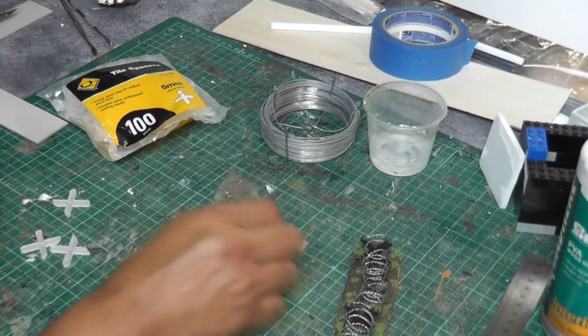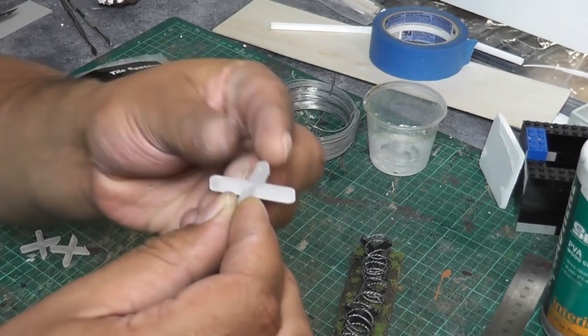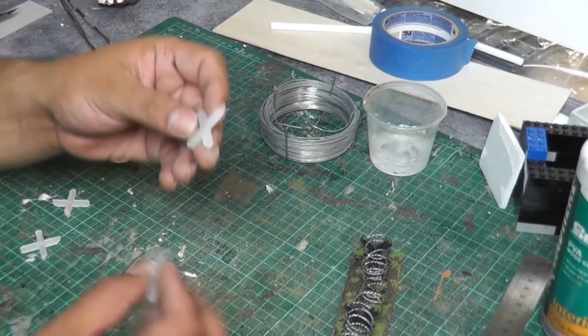Tile spacers come in these little plastic crosses obviously for putting in between your tiles so you get the correct spacing between your tiles.